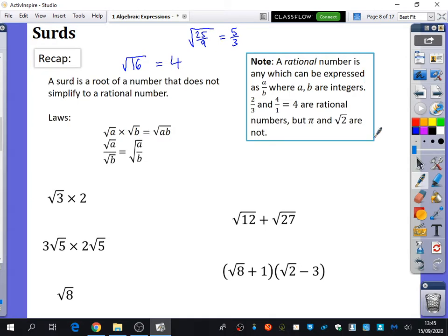So let's just quickly read what it means here to be a rational number. A rational number is any which can be expressed as A over B, where A, B are integers. So, for example, 2 over 3 and 4 over 1, which is 4, are rational numbers, but π and the square root of 2 are not rational numbers. And if something is not rational, we call it irrational. So although this doesn't look like A over B, it is actually, because you could write it as 4 over 1. So this is what we mean by rational and irrational numbers.